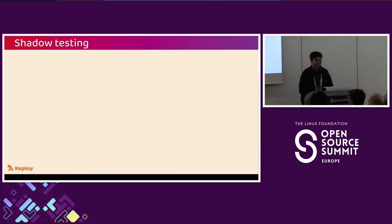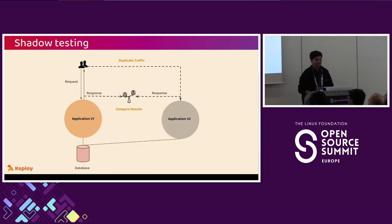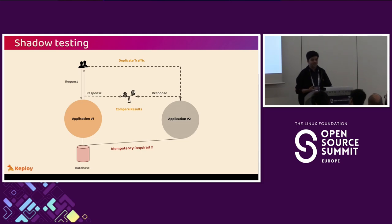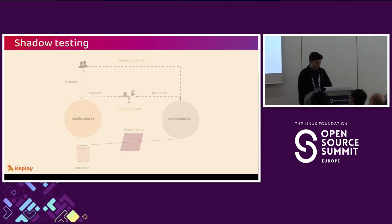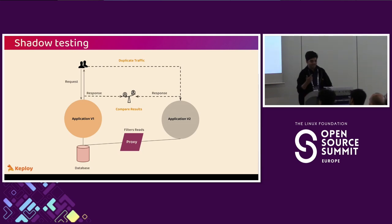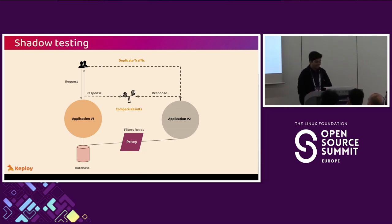Then came another crazy idea: we directly connected application v2 to the production database. The problem was we could only do read operations and expect the same initial response — by 2pm the response would differ from the 1pm request, so there was no guarantee of consistent responses. That's why we introduced a filter proxy doing only read API calls. GET requests and database fetches became happy cases — something started making sense — but write operations, updates, and deletes were still not possible.